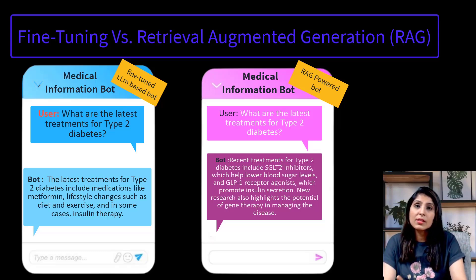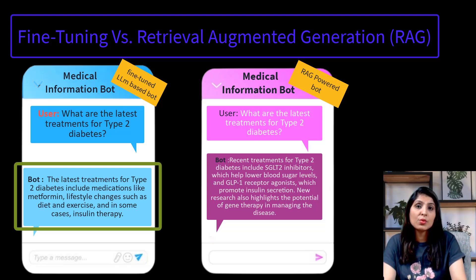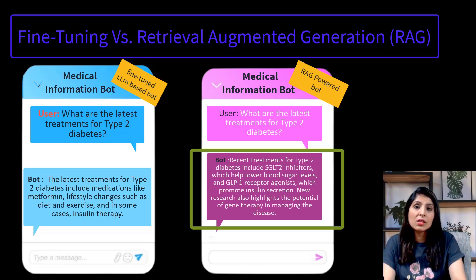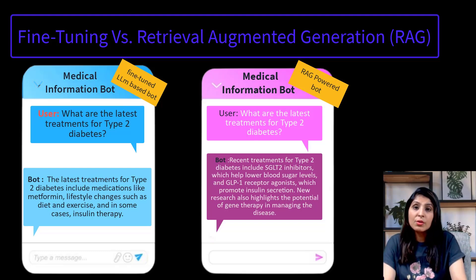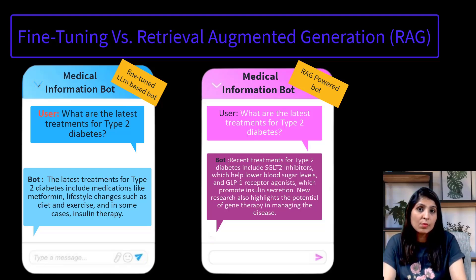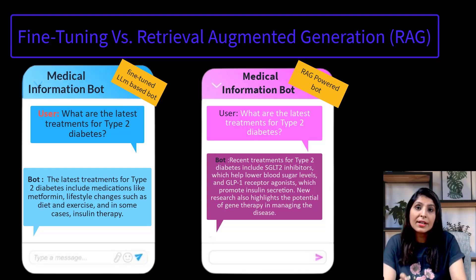Here you can see the response of the medical chatbot fine-tuned on medical data, and on the other side, the response of the medical chatbot using RAG. If a new regulation is passed or a new discovery is made, RAG can easily integrate this information immediately in its responses. But a fine-tuned model requires retraining to incorporate new information, which can be resource-intensive and time-consuming. For example, to include the latest medical treatment, the model must be retrained with new data including the latest research findings.